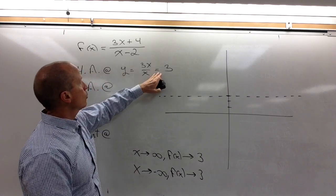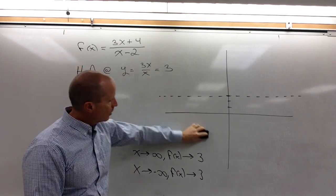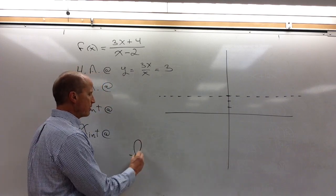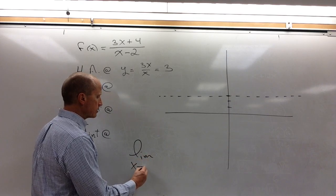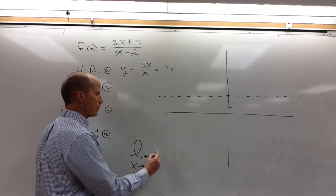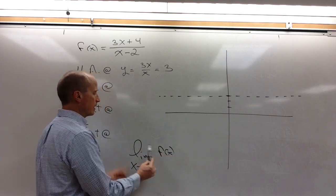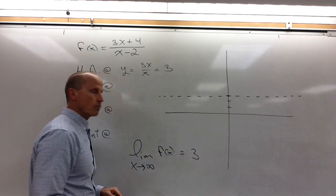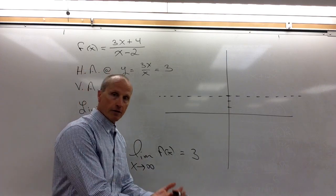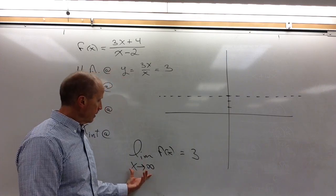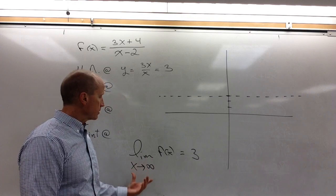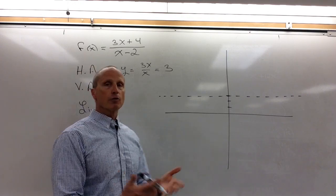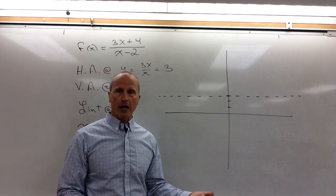There are different ways to write the end behavior. We could write it as the horizontal asymptote, or for those who have had limits, we could say the limit of the function as x approaches infinity equals 3 — that's what the function is approaching. There are different ways to write the end behavior, but that's really all we're referring to.